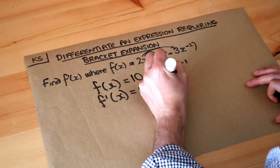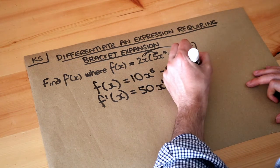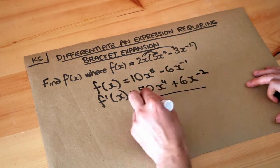...the -1, that's positive 6, and you reduce the power by 1, so the -1 becomes -2. And that is the final answer.